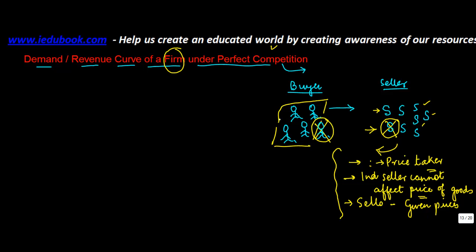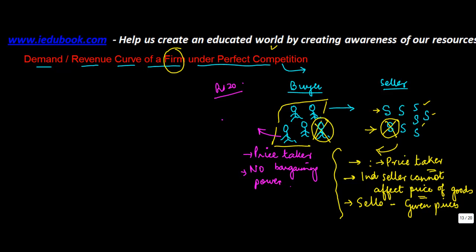Just as what goes for the seller also goes for the buyer — a buyer is also a price taker. This means that the buyer has to purchase at the price determined by the market forces of demand and supply. There is no bargaining power with the buyer. So if the price of the commodity is rupees 20 in the market, he can't say 'I'll buy 2X quantity, give it to me at 19 rupees.' He doesn't have bargaining power and has to accept the market price of 20.